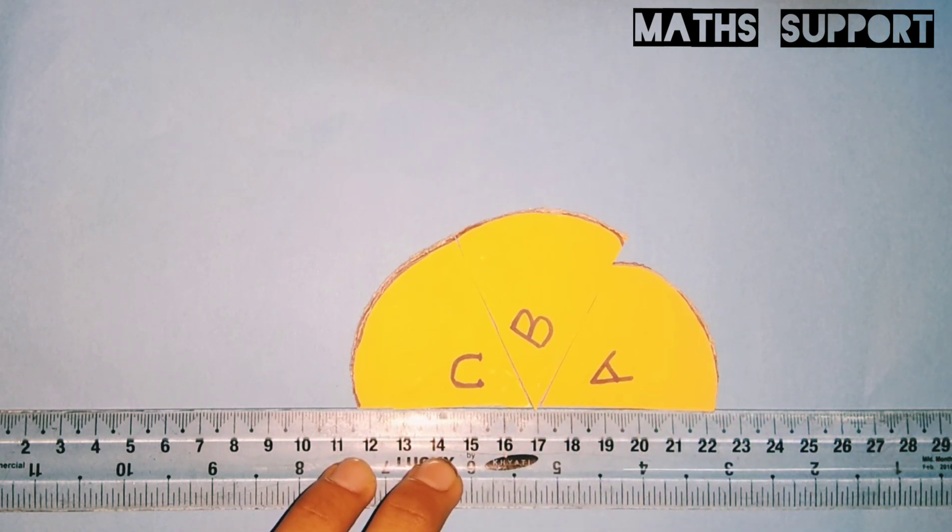So this is a very simple logic for angle sum property of triangle is 180. That's all.